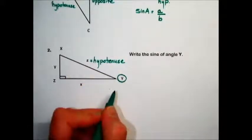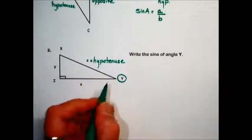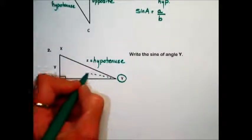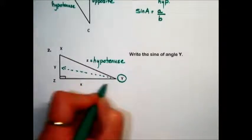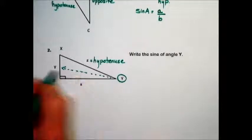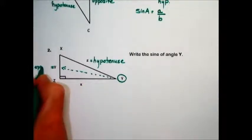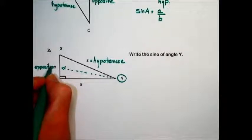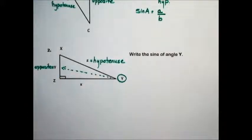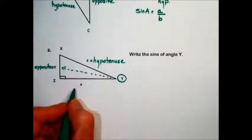Next, we identify the opposite side. The opposite side is the leg length that is opposite the reference angle. And last, we identify the adjacent side, the unnamed side.